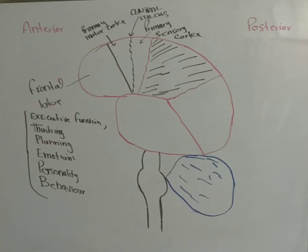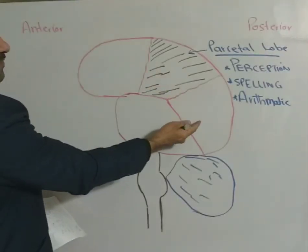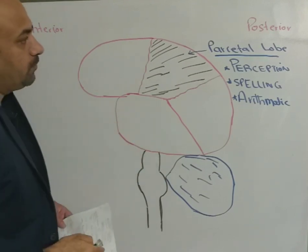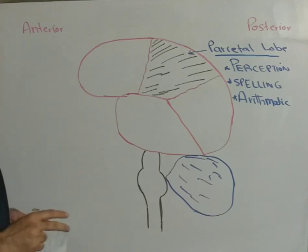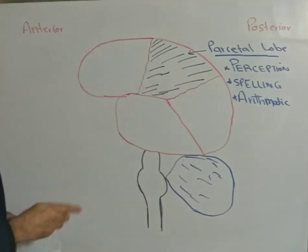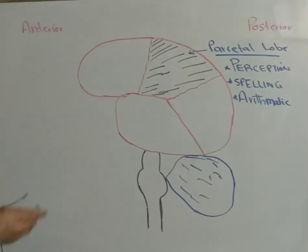When we talk about the functioning of the parietal lobe, which is posterior to the frontal lobe and slightly superior to both the temporal and occipital lobes, the parietal lobe is involved in very specific tasks. When we are doing math or arithmetic, this is the function of the parietal lobe. If you are to remember spellings and spell something out, that task is mainly concerned with the parietal lobe. Perception of things — how you perceive the world and what sense it makes to you — is also concerned with the parietal lobe.